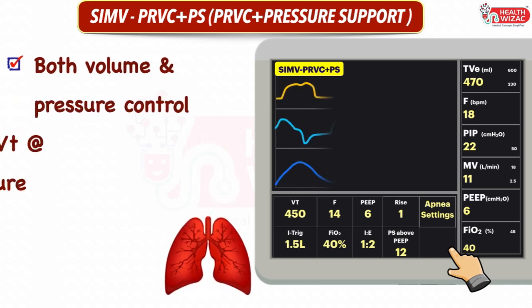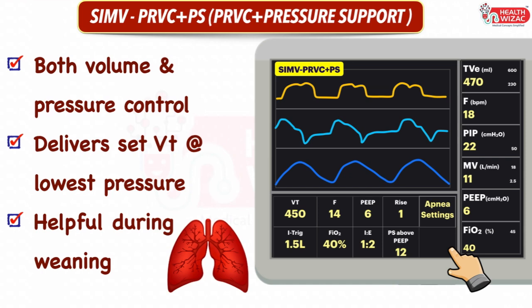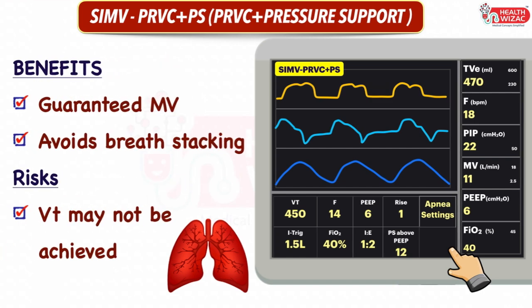SIMV PRVC plus pressure support is a mode that allows control of both pressure and volume settings. The ventilator delivers a preset tidal volume at a set rate with the lowest possible pressure, thus avoiding the risk of barotrauma. This mode is very helpful during the weaning process. Advantages include guaranteed minute ventilation and reduction in breath stacking, whereas risks include non-delivery of preset tidal volume sometimes.